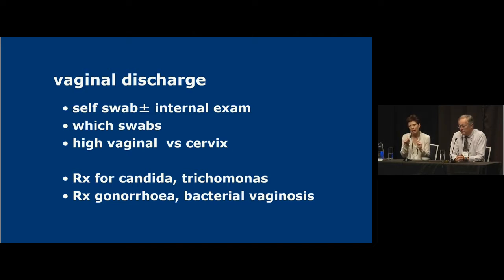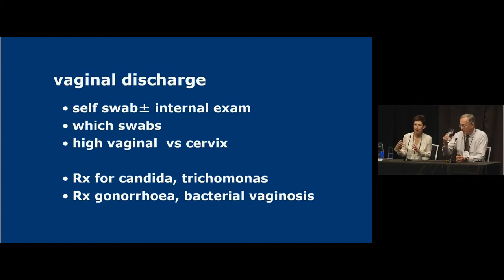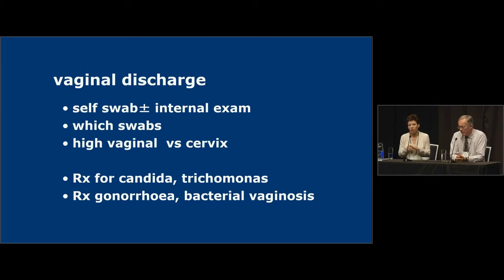Trichomonas only gets done where requested, and we ask you to request it only where the person has risk — which is really Māori and Pacific women, and to a much lesser extent men, and people who are low socioeconomic. In someone who lives in Remuera, vaginal discharge is more likely to be Candida and BV, and it would only be appropriate to request trichomonas if those two things are not ruled out. Trichomonas definitely does cause vaginal discharge.